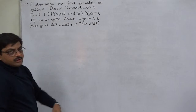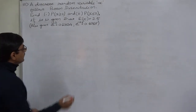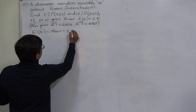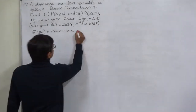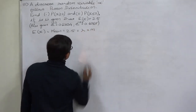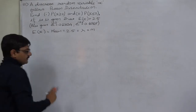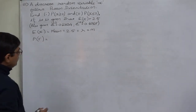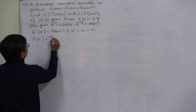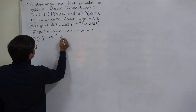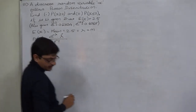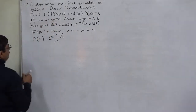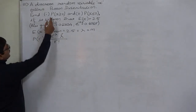We know that the expected value is the mean of a distribution. So E(X) = mean = 2.5. In Poisson distribution we use the symbol lambda, or simply M, for the mean. The formula to calculate the probability of any number of successes according to Poisson law is: e^(−mean) × mean^r / r!.